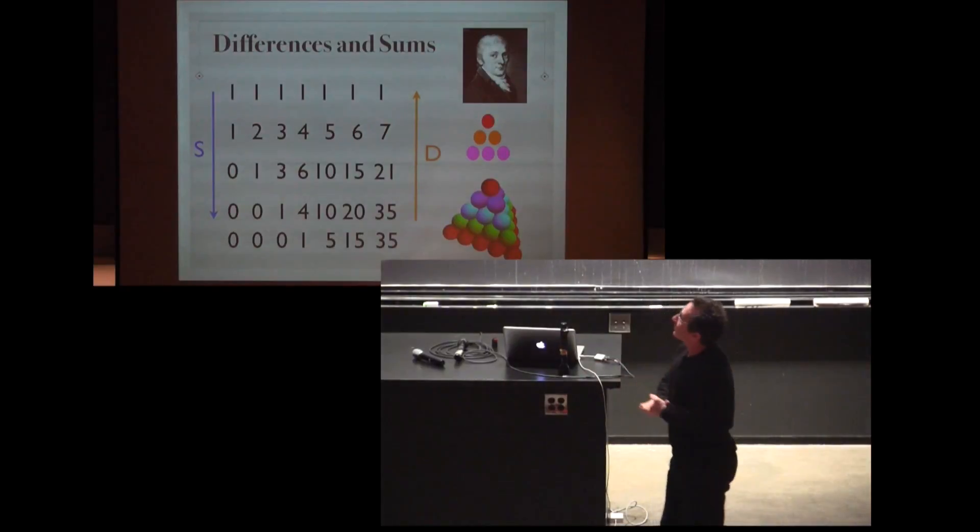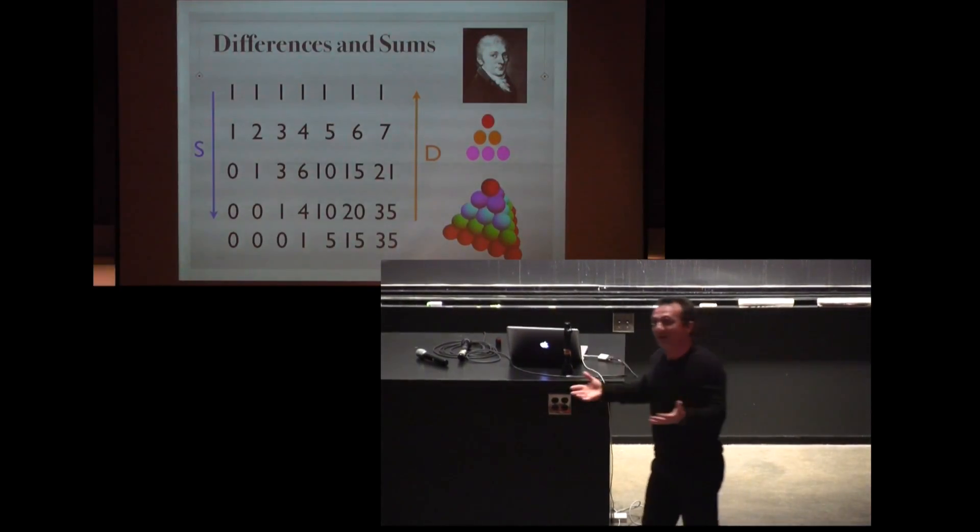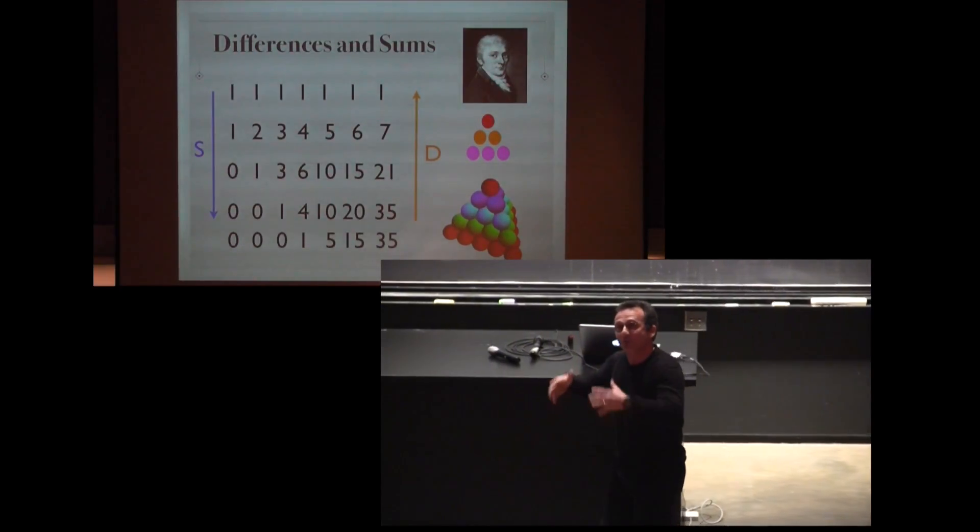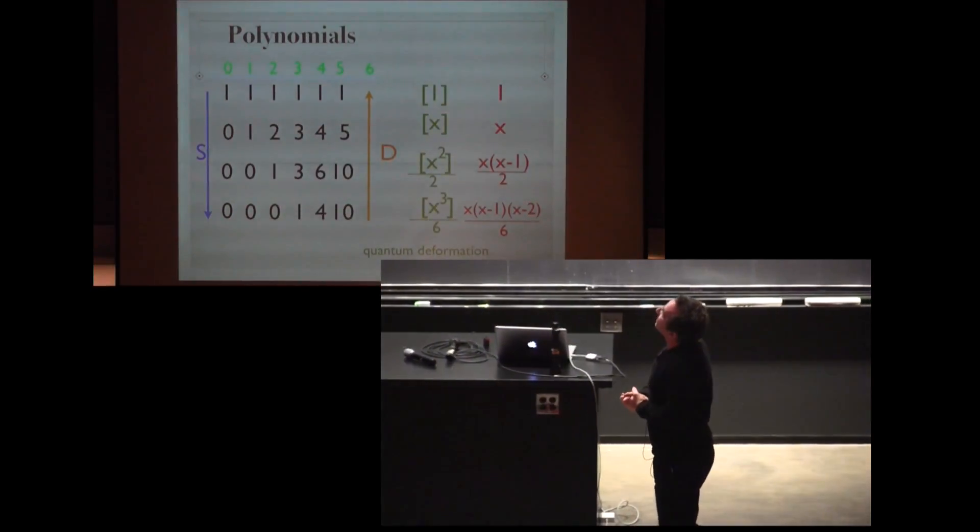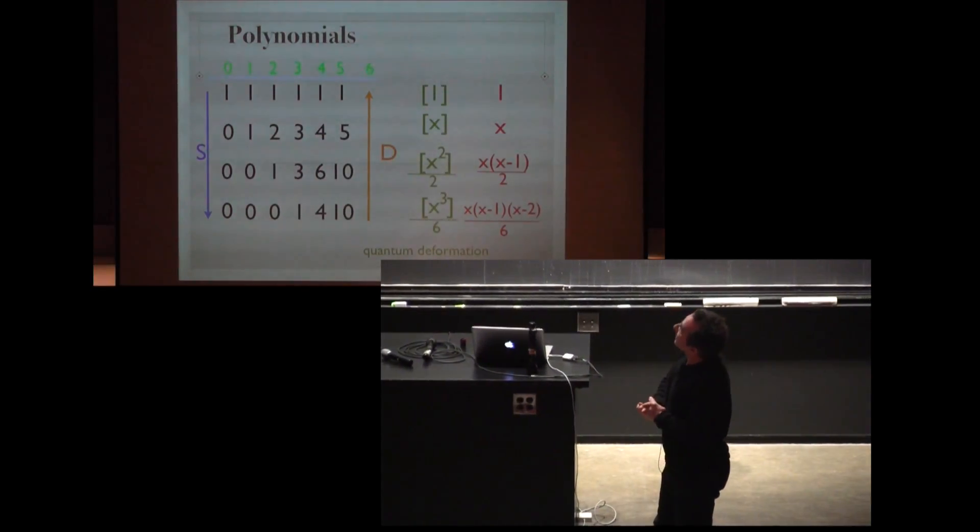Gauss did that when he was a 6 year old boy. Or we can add up these triangular numbers, stacking triangles on top of each other, and we get a volume called tetrahedral numbers. So here you see the Pascal triangle again.